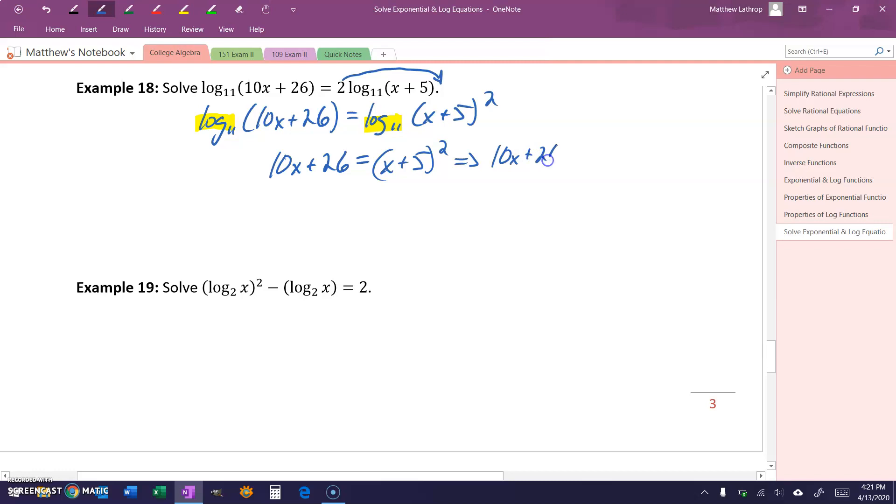On the left-hand side, we would have just that 10x plus 26, and expanding on the right-hand side, we would get x squared plus 10x plus 25. The 10x on each side would cancel out, and subtracting 26 to the other side would give us minus 1.